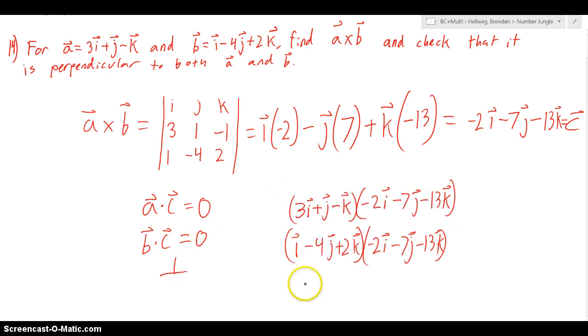So these are the two things that we're going to be multiplying. So let's do this one first. First, we multiply them by their components. So 3i times negative 2i is going to equal negative 6, and then 1j times negative 7j is going to equal negative 7, and then negative 1k times negative 13k is going to equal 13. And what that's going to equal is 0.